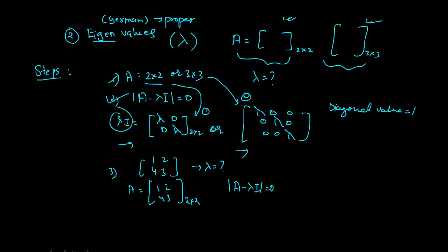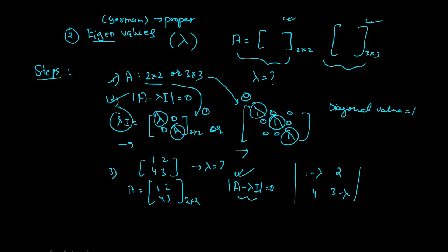So I need the subtraction between these two. Determinant of [1−λ, 2; 4, 3−λ]. Only the diagonal part has the value of lambda — everything else is 0. So the diagonal elements 1 and 3 become 1−λ and 3−λ, and the remaining elements stay as they are. Now find the determinant: (1−λ)(3−λ) minus 4×2 = 0, which is 8 = 0.